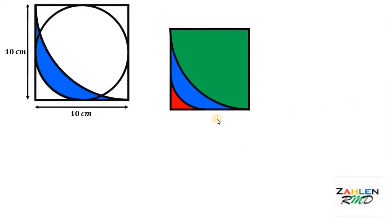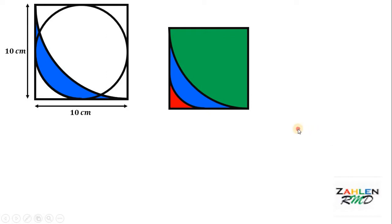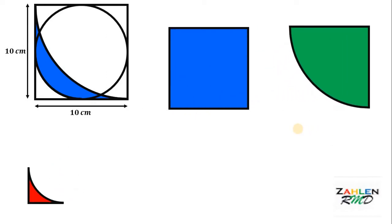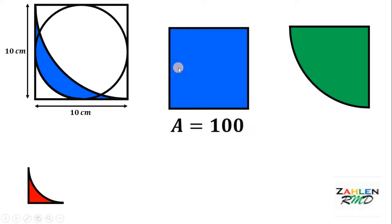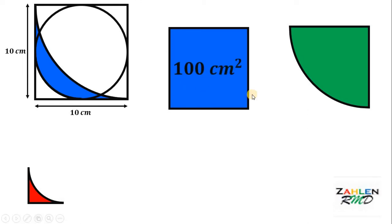In order to find the area of this blue region, let's focus on these three different shapes. Let's start with the easiest one — the square. We know the area of the square is given by the formula: Area = S². We know the side length is 10 centimeters, so we have 10² = 100. Therefore, the area of this square is 100 square centimeters.